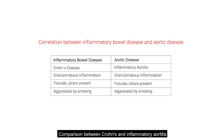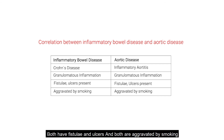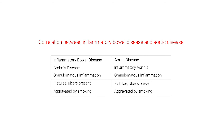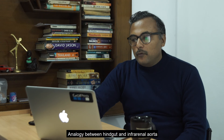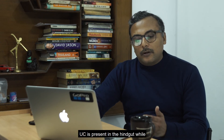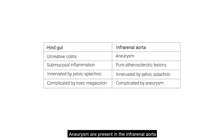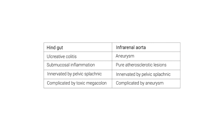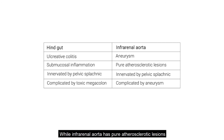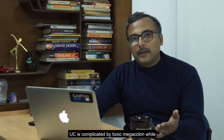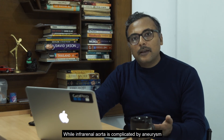The correlation between inflammatory bowel disease and aortic disease: Crohn's disease and inflammatory aortitis are both granulomatous inflammations, both have fistulas and ulcers, and both are aggravated by smoking. An analogy between the hindgut and the infrarenal aorta: ulcerative colitis is present in the hindgut while aneurysms are present in the infrarenal aorta; ulcerative colitis has submucosal inflammation while aneurysms have atherosclerotic lesions in the infrarenal aorta. Both are innervated by the pelvic splanchnic nerves, and ulcerative colitis is complicated by toxic megacolon while aneurysms are complicated by rupture.